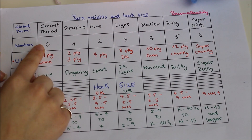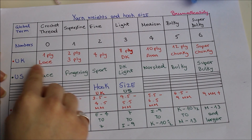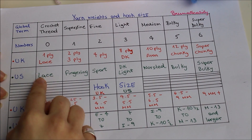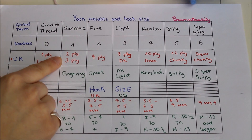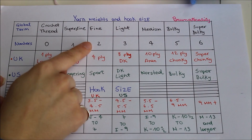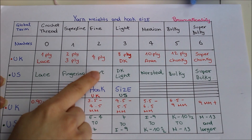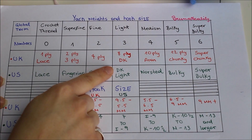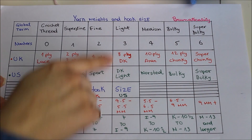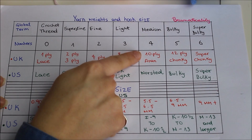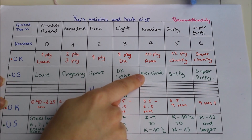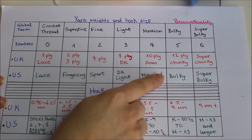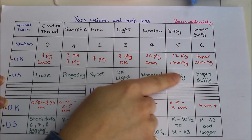For the UK, number 0 is 1 ply and it's called lace — and for the US, number 0 is also called lace. Ply is just the term they use for yarn weights. For number 1 in the UK we have 2 ply and 3 ply, and in the US it's called fingering. For number 2, in the UK it's 4 ply and in the US it's sport. For number 3, in the UK it's 8 ply and it's called DK — same for the US, they call it DK but also light. For number 4, in the UK it's 10 ply and it's called Aran, and in the US it's worsted. For number 5 we have 12 ply, called chunky in the UK, and bulky in the US. For number 6 we have super chunky in the UK and super bulky in the US.